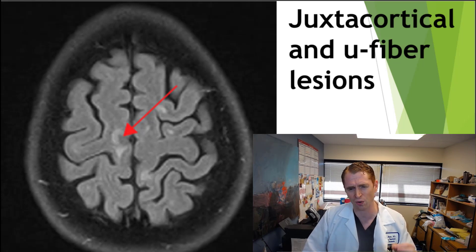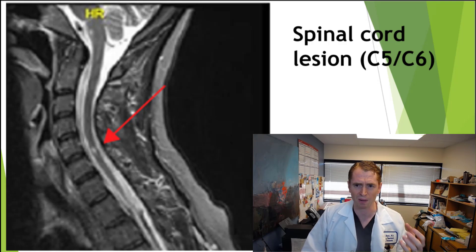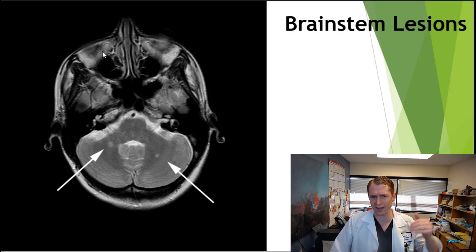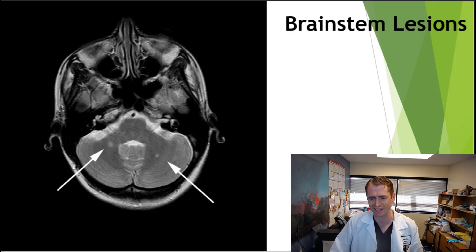Here's another image showing juxtacortical and U fiber lesions — essentially the same thing, but U fiber lesions have this distinctive shape. Here you can see another spine lesion typical of MS. You can also get brainstem lesions. Looking at an axial slice lower down in the brain, we're looking at the pons, middle cerebellar peduncles, and cerebellum. You can see a lesion in the right middle cerebellar peduncle and another in the left cerebellum, very typical of demyelinating disease.